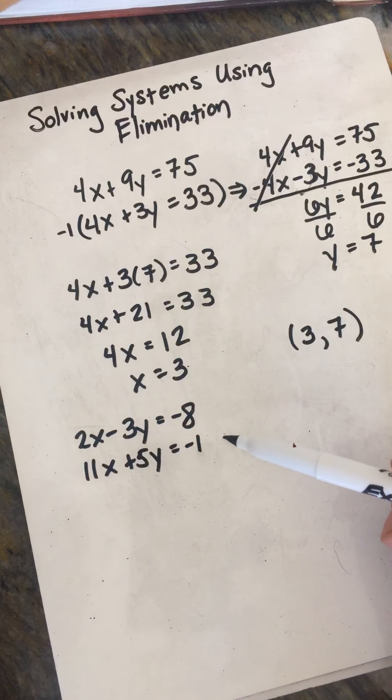And then pick your favorite equation. I think I'm going to work with the top because I'm not a big 11 fan. 2 times negative 1 minus 3y equals negative 8. Negative 2 minus 3y equals negative 8. Add 2, so negative 3y equals negative 6, giving us y equals 2. So the ordered pair where these two lines would cross is the coordinate (negative 1, 2).